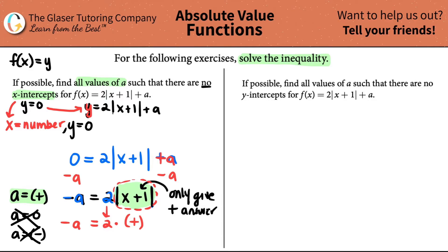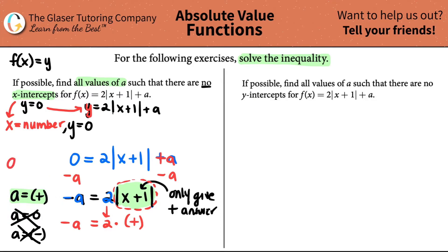So this is the only case in which there are no x-intercepts: when a is a positive number. A just has to be greater than 0. That is your answer. You can also write it in interval notation: from 0 all the way to positive infinity, but we have to exclude 0, so it's a parenthesis, not a bracket. Bracket means you include 0, and infinity is always a parenthesis because it's a theoretical concept. Either of these two answers are correct.